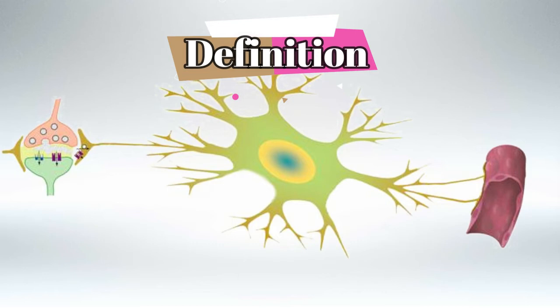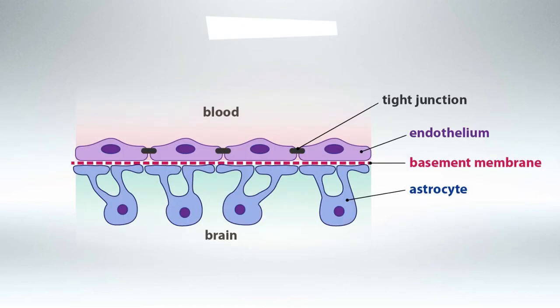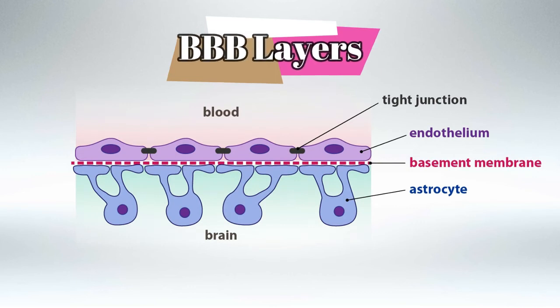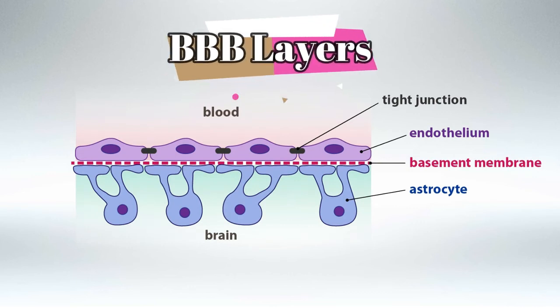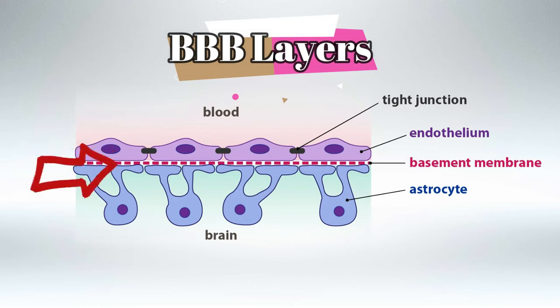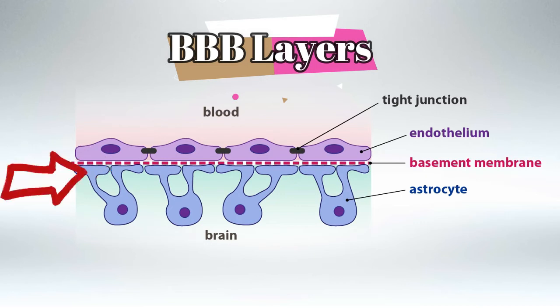The astrocyte is highly selective in what materials can go in and what materials cannot. The layers that make up the blood-brain barrier, from the blood side, are: the blood, the endothelial cells, the basement membrane in which the endothelial cells lie, and finally the astrocyte feet. These are the four layers that make the blood-brain barrier.